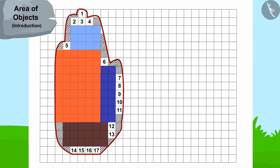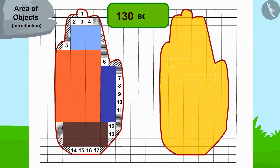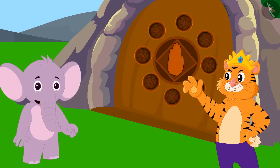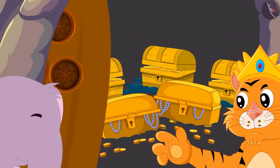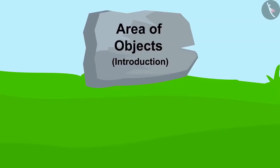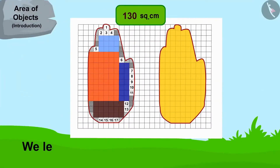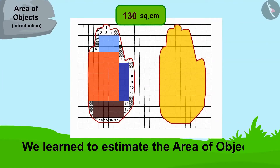Appu's hand impression matched the impression on the cave door. The king opened the door with Appu's help and gave him half of the treasure in return. Children, in this video, we learned to estimate the area of objects. In the next video, we will learn more about it through some interesting examples.